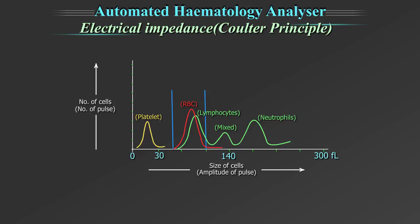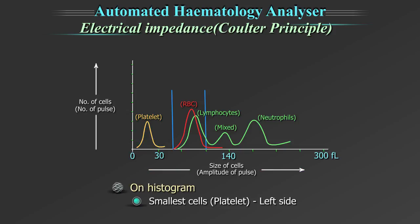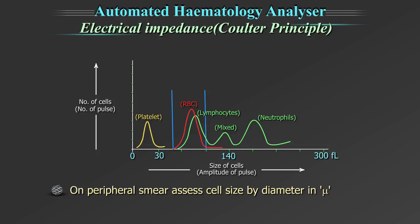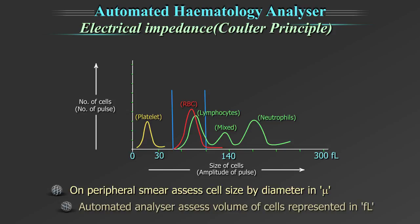Histograms are a graphical representation of numerical data of the different cell populations counted on the cell counter. The x-axis represents the size of the cells in femtoliters, assessed by the amplitude of the pulse. The smallest cells, that is the platelets, are represented on the left side of the histogram, and the largest cell population is represented towards the right side. On a peripheral smear we assess cell size by its diameter in micrometers, whereas in an automated analyzer we assess the cell volume, which is represented in femtoliters.